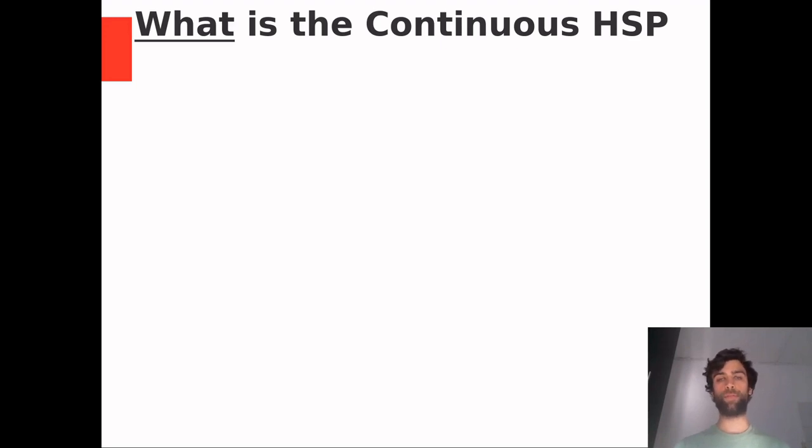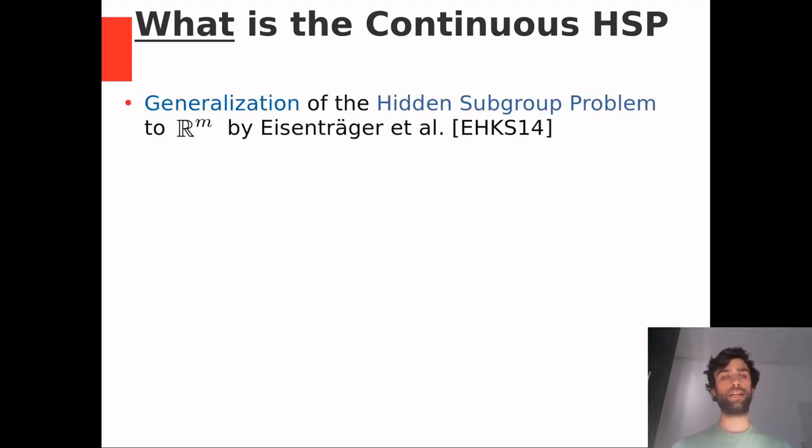So what is the continuous hidden subgroup problem? As I already said, it's the generalization of the ordinary hidden subgroup problem. In this problem, you need to find a hidden subgroup given a function on the ambient group that is periodic with respect to this particular hidden subgroup. In the continuous version of the hidden subgroup problem, this ambient group is the real vector space, r to the power m. And the hidden subgroup is a lattice. So this oracle function is periodic with respect to a lattice.